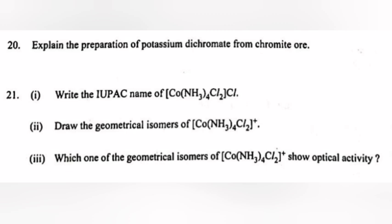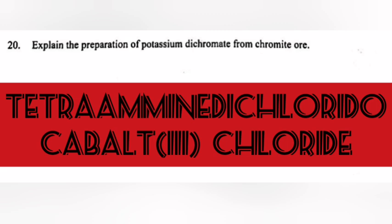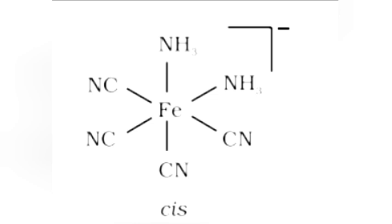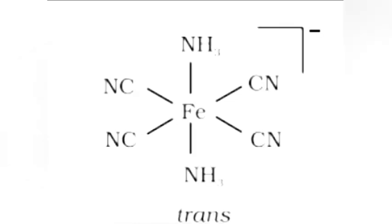Question 21: Write the IUPAC name of [Co(NH3)4Cl2]Cl. Answer: Tetraamine dichlorido-cobalt(III) chloride. Part 2: Draw the geometrical isomers of [Co(NH3)4Cl2]+. Answer: Cis-isomers and trans-isomers.